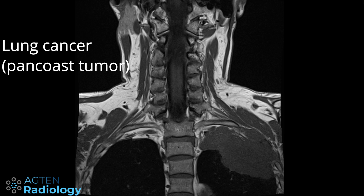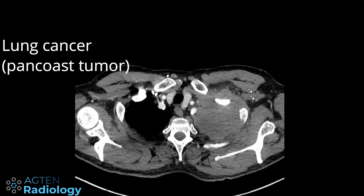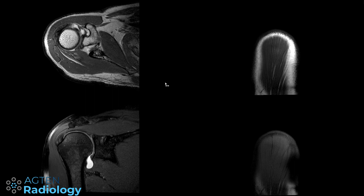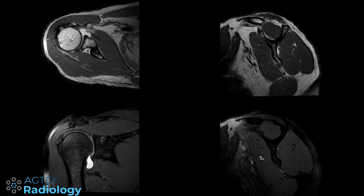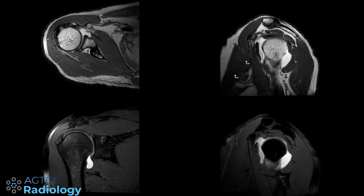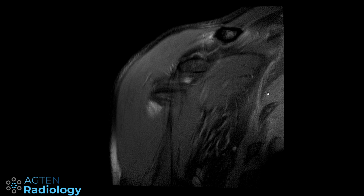Let me show you the corresponding CT in this case, which is quite remarkable — all this tumor. Incidental findings in joints are also frequently encountered, especially in the shoulder. Here we can see a shoulder MRI where you look at all your typical structures, scroll through, and nothing really jumps out at your eye.